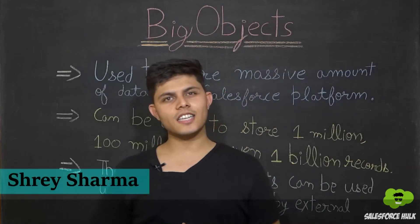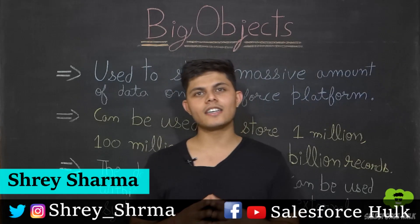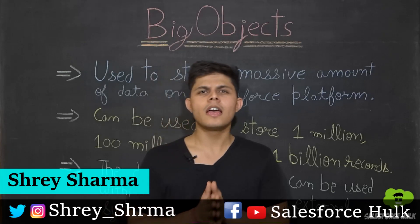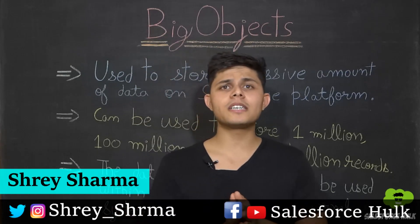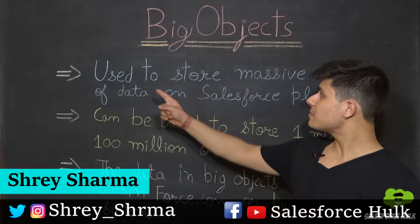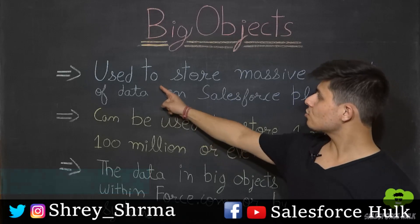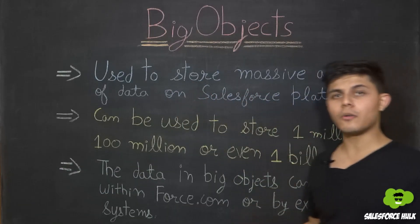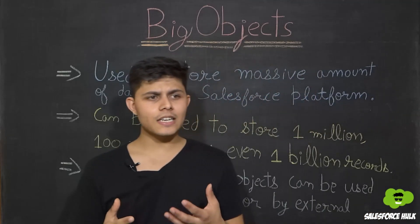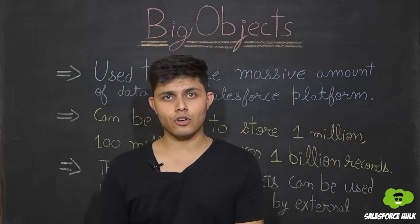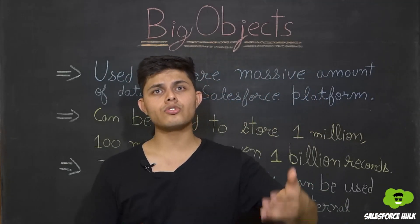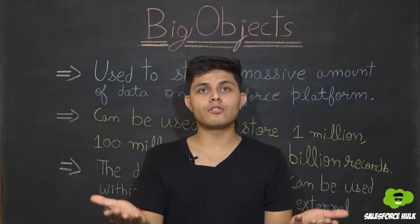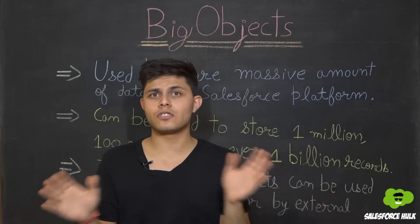Big object is a feature in Salesforce that got released in Summer 15 as a pilot feature, but now it's available. Big objects are used to store a massive amount of data on the Salesforce platform. Standard objects are used to store data in Salesforce, whereas big objects are used to store massive amounts of data.